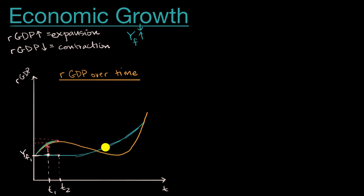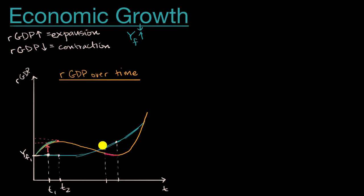The times where we actually are experiencing economic growth are times where our full employment output is changing. So from this time to this time — notice that is happening theoretically during a contraction, where real GDP is actually pulling back. But if we knew truly what the full employment output were and we're able to plot it like this, theoretically we actually are experiencing economic growth here despite a contraction.